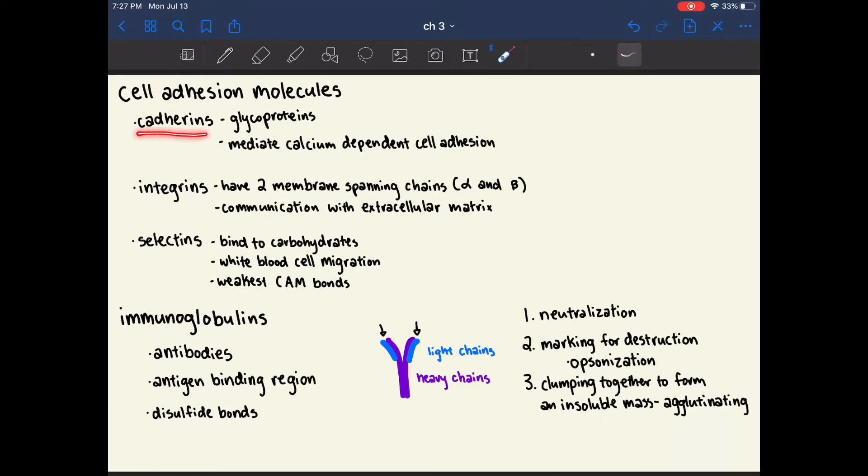The first class are called cadherins, and these are glycoproteins that mediate calcium-dependent cell adhesion. Cadherins almost always attach similar cell types together, so they attach epithelial cells to epithelial cells and nerve cells to nerve cells. There are different types of cadherins for different types of cells. For example, the cadherin used for epithelial cells are called E-cadherin, and for nerve cells they're called N-cadherin.